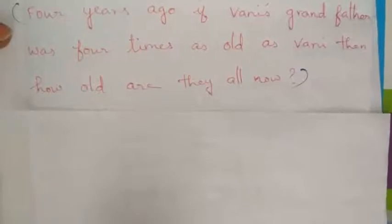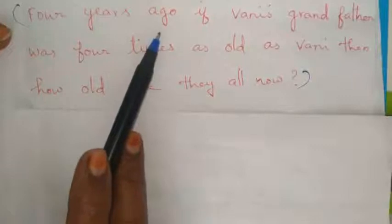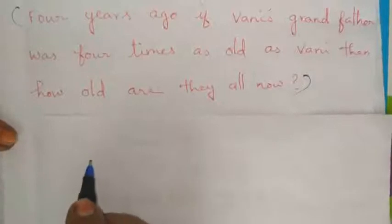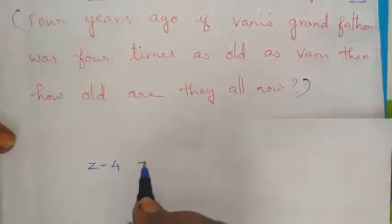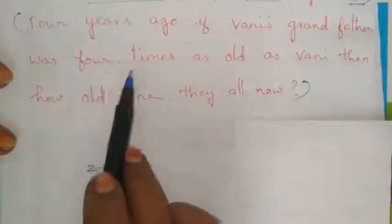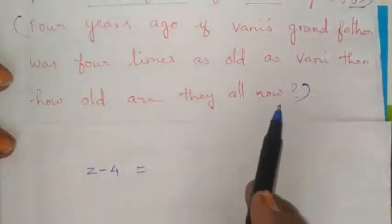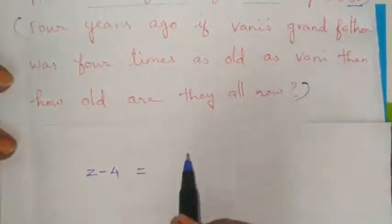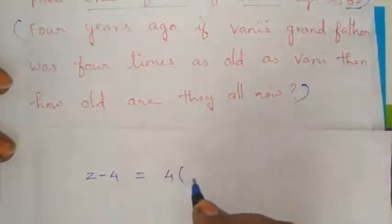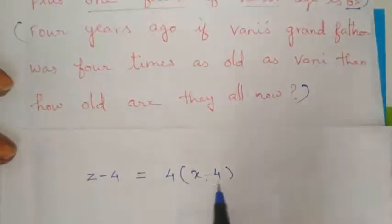Now the third equation. Four years ago, grandfather's age — z minus 4 — was equal to four times as old as Vani. So z minus 4 equals 4 into x minus 4. This gives us the third equation.